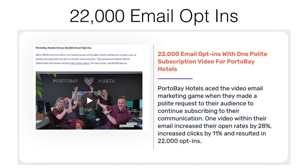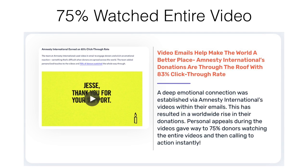Here is a different example of Porto Bay Hotels. They used a video inside of their email and they got 22,000 opt-ins from that campaign, and they increased their open rates by 28% and increased their clicks by 11%. A smash hit for their campaign where they tested videos inside of emails. So the whole power behind Email Videos Pro is that you can play actual videos inside of emails - not just a GIF but actual videos depending on your audience's autoresponder. Then here we have Amnesty International, and they used a video campaign inside of their emails and they improved their click-through rate by 83%. And 75% of the audience watched the entire video till the end.